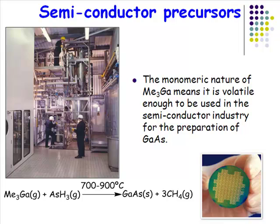Trimethylgallium is used in combination with a volatile arsenic source — arsenic trihydride. These two species react in a radical reaction to produce methane gas and gallium arsenide. Gallium arsenide is a 3-5, or 13-15, semiconductor material.